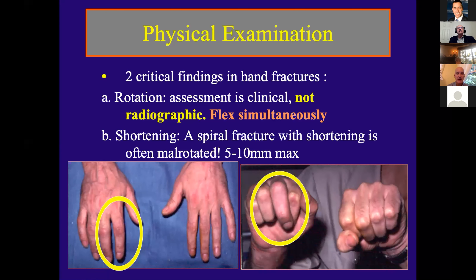It's not easy to ask somebody with a fractured finger to bend their finger, but you have to get some sense of rotation. Shortening is often associated with rotation. If you have a spiral fracture showing five to ten millimeters of shortening on x-ray, you really need to think this is probably malrotated. So really do a good clinical assessment.